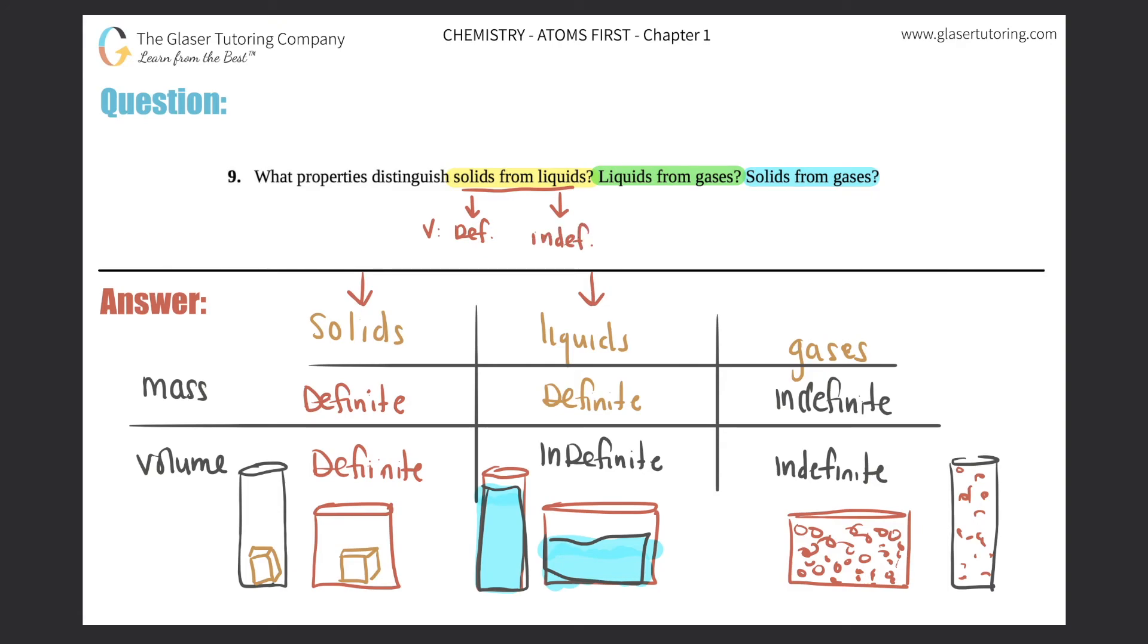Liquids from gases? Well, let's see. Liquids have a definite mass and an indefinite volume. What about gases? Their masses change—it's indefinite versus definite. Or sorry, versus they're both indefinite. So what changed here? The mass. So liquids have a mass that's definite and gases have a mass that is indefinite.